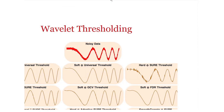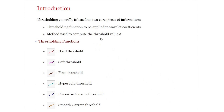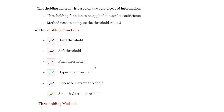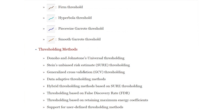Now let us look at more detail on what constitutes wavelet thresholding. In Mathematica there are several implementations of thresholding functions: hard threshold, soft threshold, firm, hyperbola, piecewise, and smooth garrote thresholds. Associated with each thresholding function are a number of methods for computing the cost function: unbiased methods, generalized cross-validation, universal thresholding, and so on.